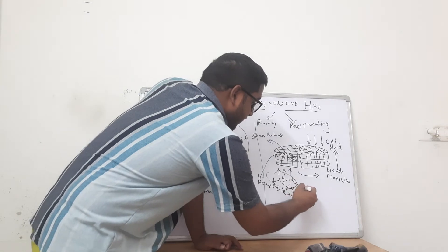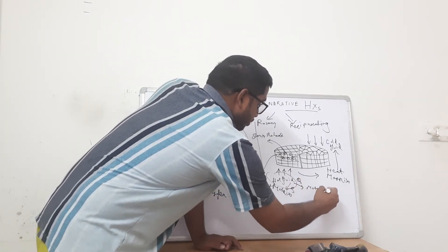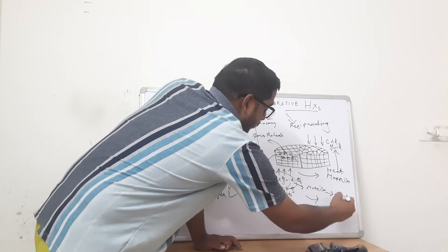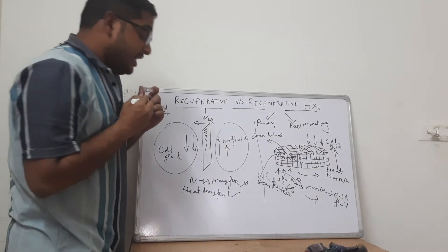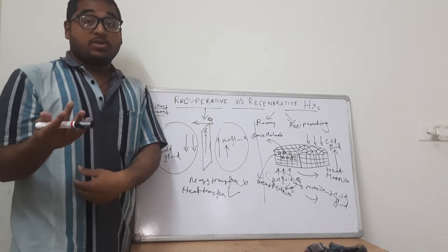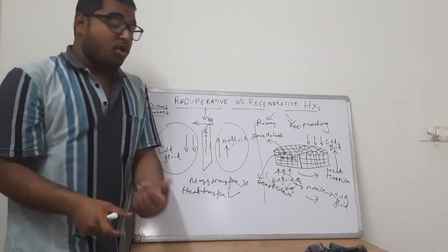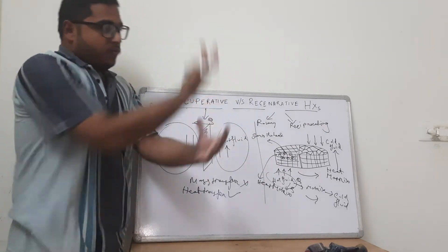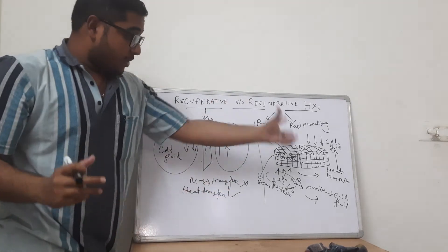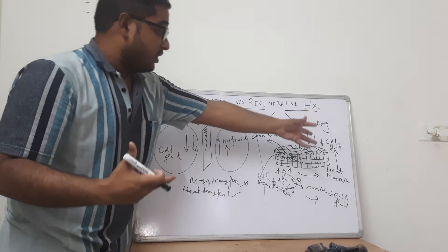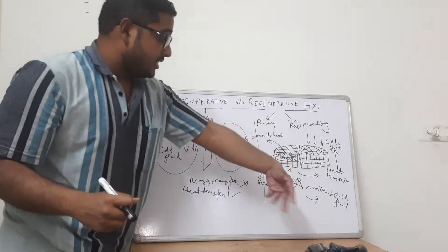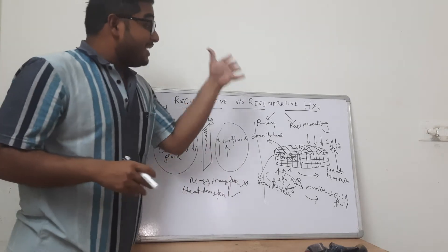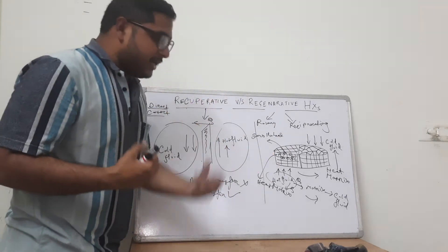So firstly, the hot fluid transfers heat to the matrix — the core structure. The matrix stores the heat within itself, rotates, and then gives this heat to the cold fluid. Partially, the heat is stored by the heat matrix and then transferred to the cold fluid. Both the hot fluid and the cold fluid pass through the same matrix structure in a continuously rotating circuit: the hot fluid comes in, gives heat to the matrix, the matrix rotates and comes in contact with the cold fluid, and the cold fluid withdraws the heat from the matrix and moves out. This is a continuous and quick procedure.